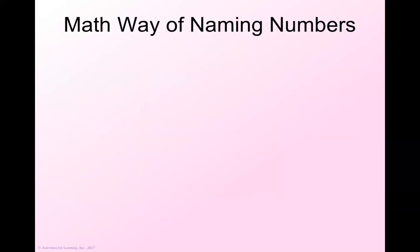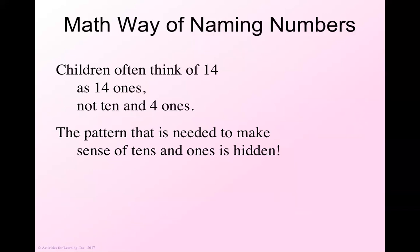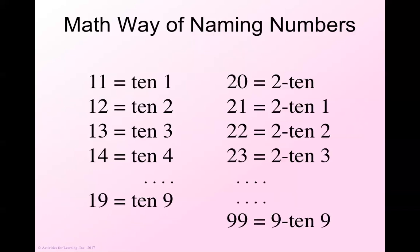We talked about the abacus and subitizing. Another thing that is different and very prevalent in Level A is what we call the math way of naming numbers. A lot of times children think of 14 as 14 ones instead of 10 and four ones. The pattern that's needed to make sense of the tens and ones is hidden by our English language. Here's what it might look like. We have 1, 2, 3, 4, 5, 6, 7, 8, 9, 10. And then a lot of times kids want to say 10, 1.